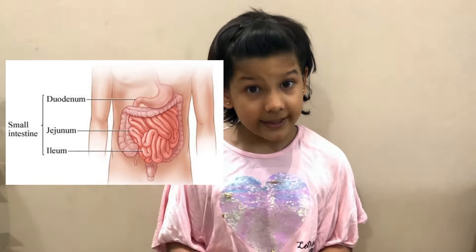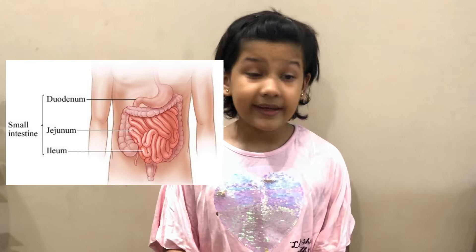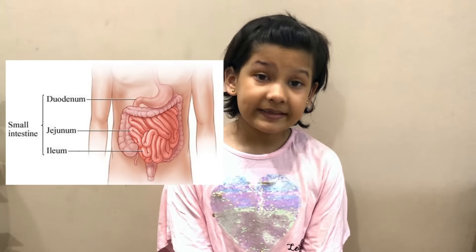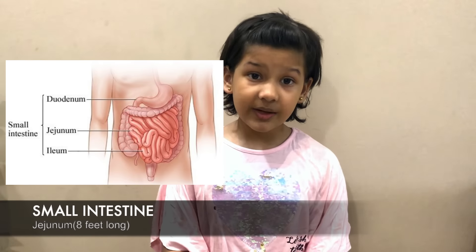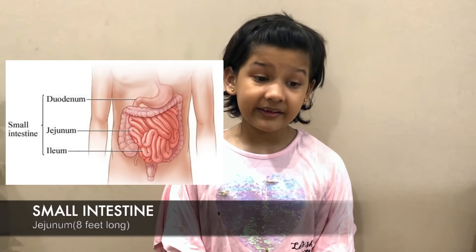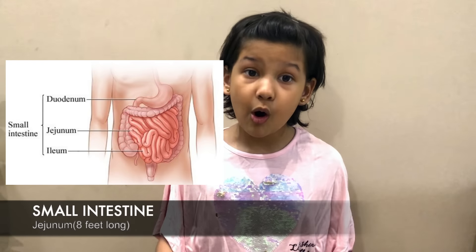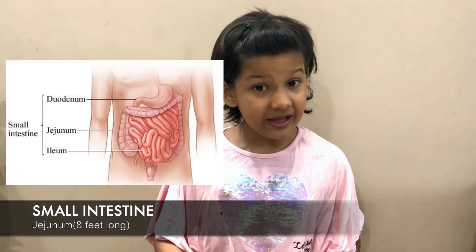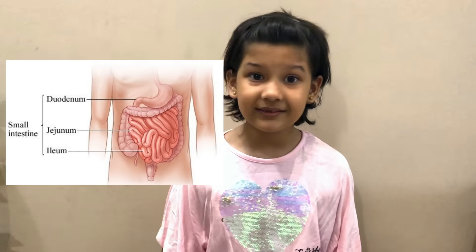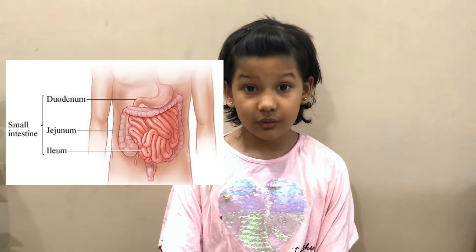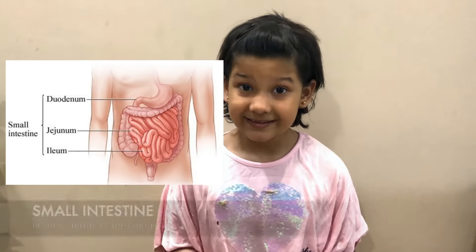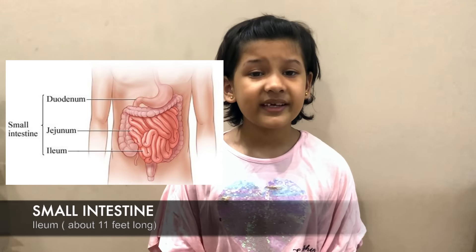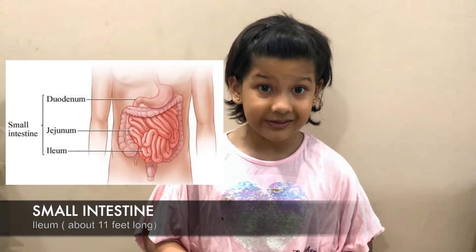I will be telling about the pancreas and liver in the next video. When all the digestion is done in the duodenum, the food passes to the next part of the small intestines, that's the jejunum. The jejunum is 8 feet long and absorbs all nutrients from the food and sends it to all body cells. The food then goes to the next part, the ileum, which is 11 feet long and connects to the large intestine.